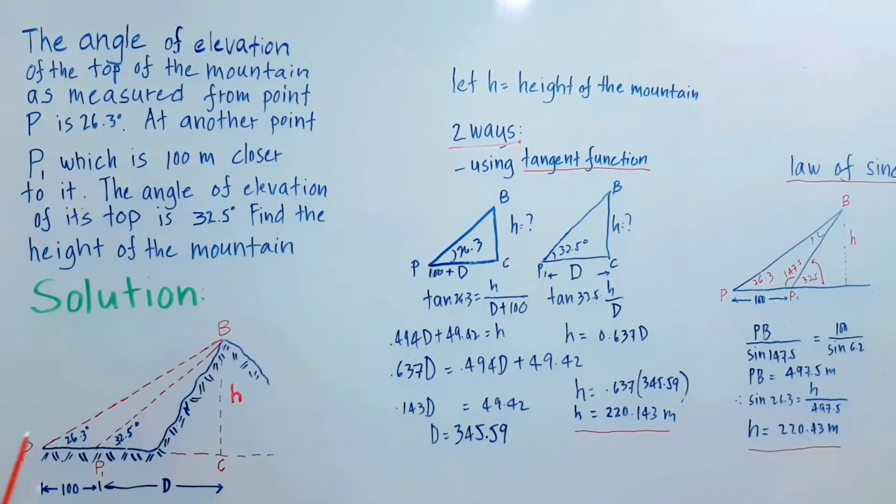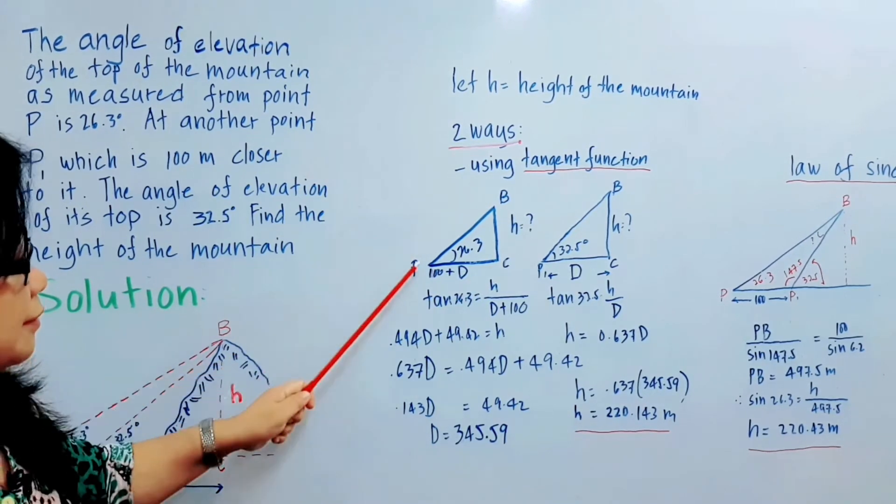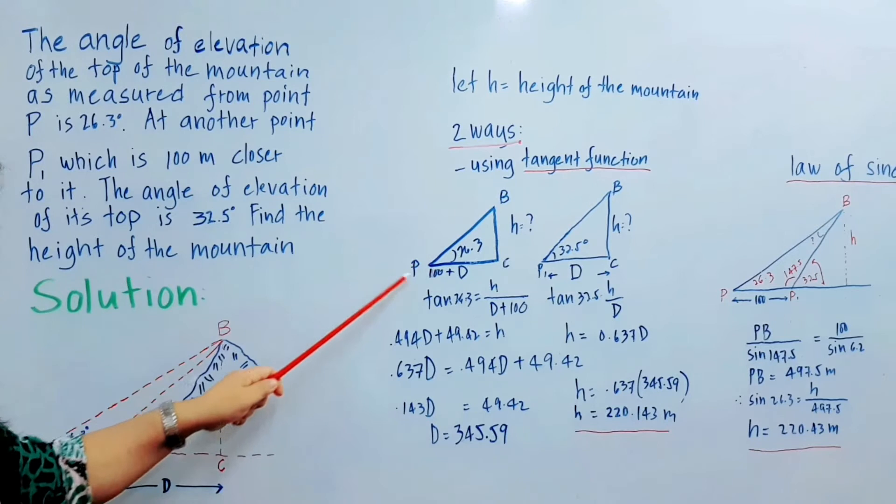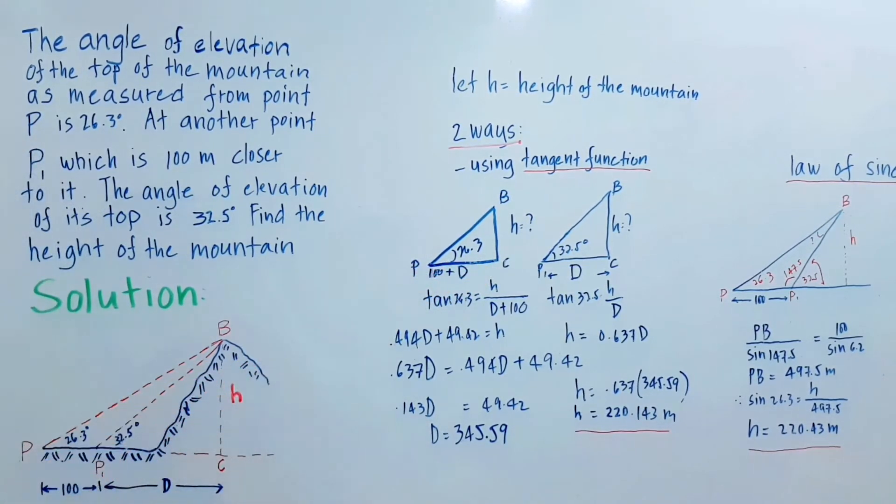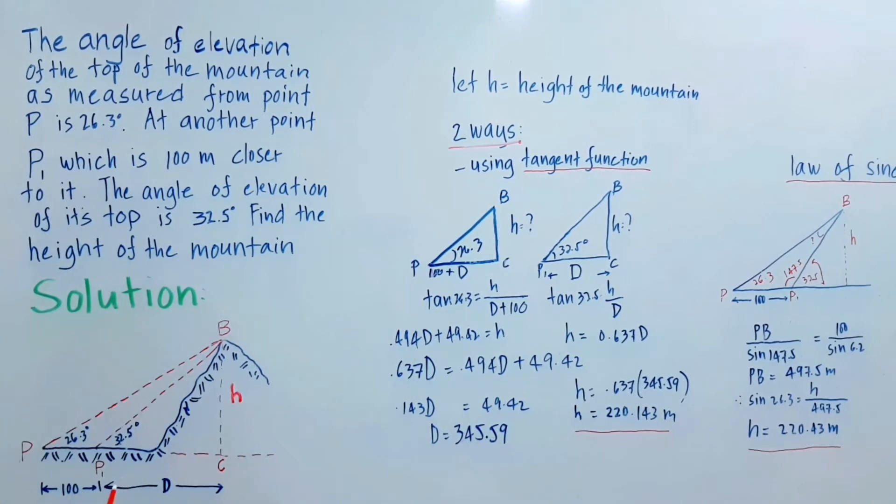In the first large right triangle, let's extract it. Here is P and B, this is one side, and this one down is 100 plus the distance. From here to here is 100 plus the distance. We designate from point P1 to the point where the peak of the mountain is as D. Therefore, the distance from P to C is equal to 100 plus D.